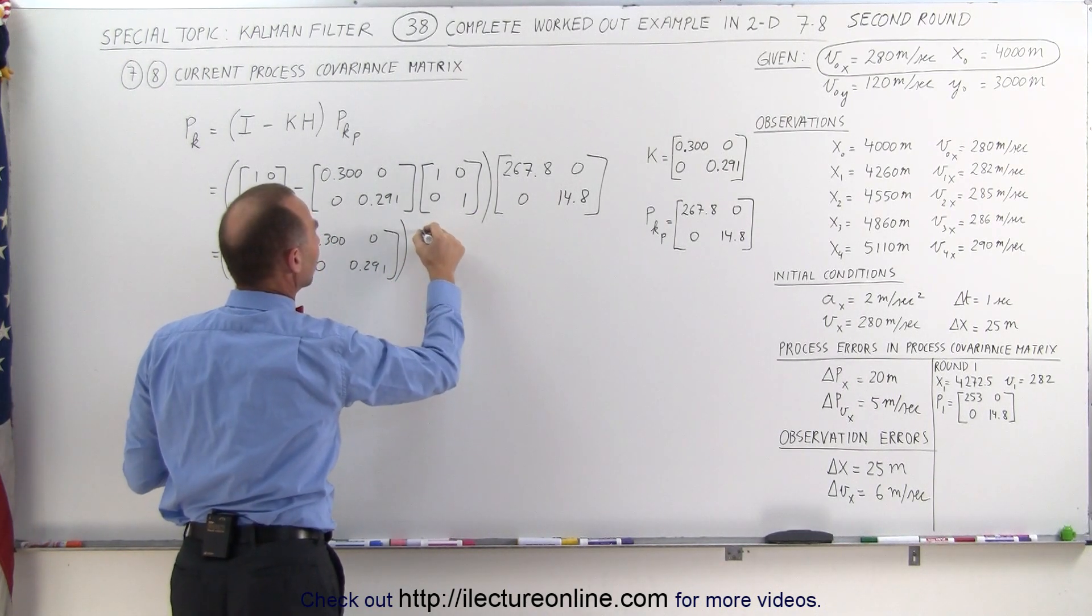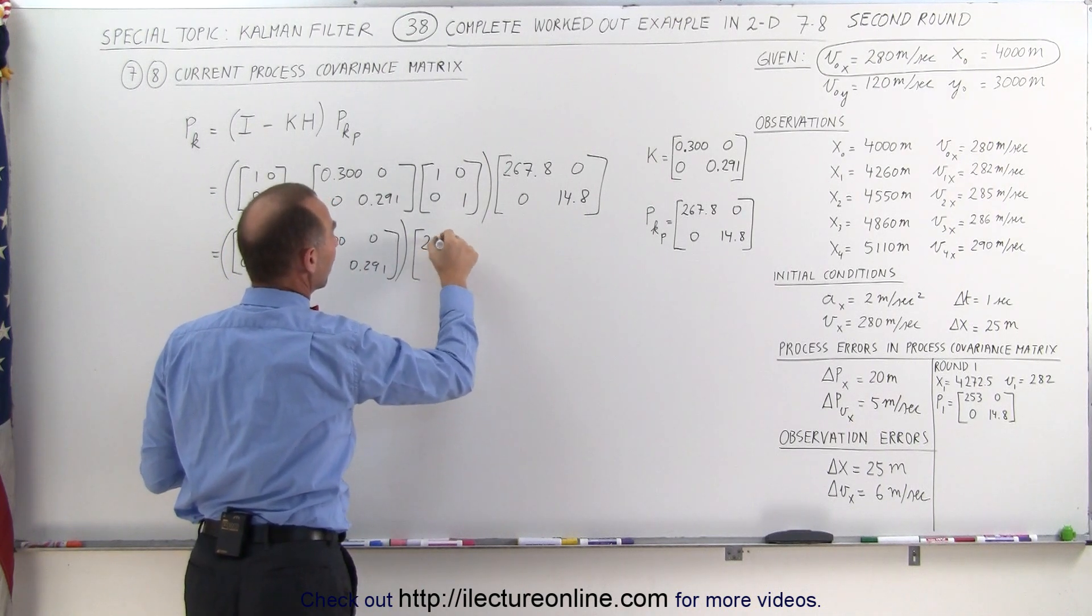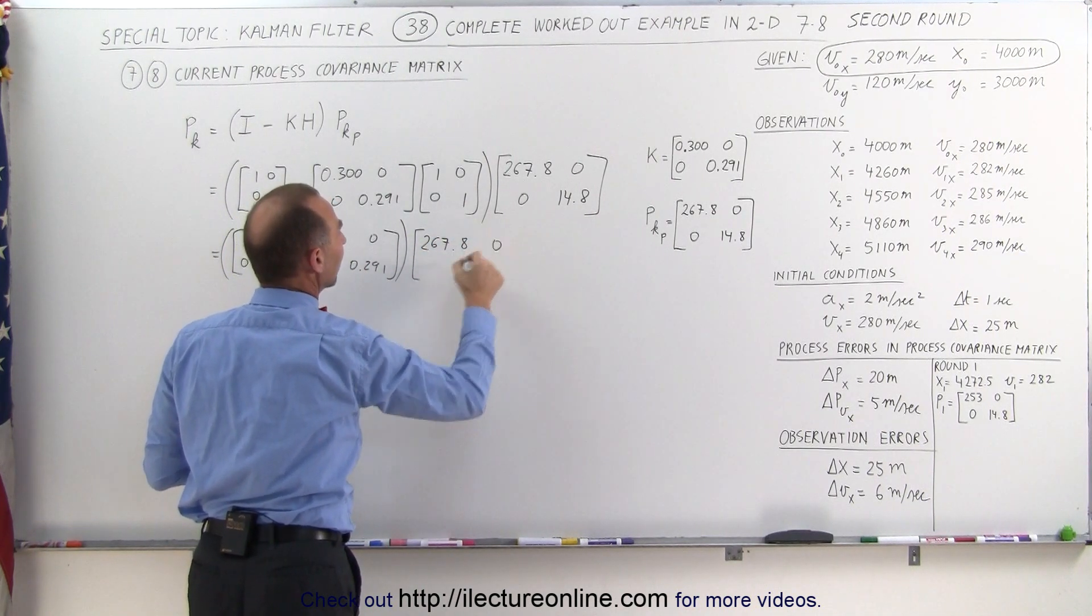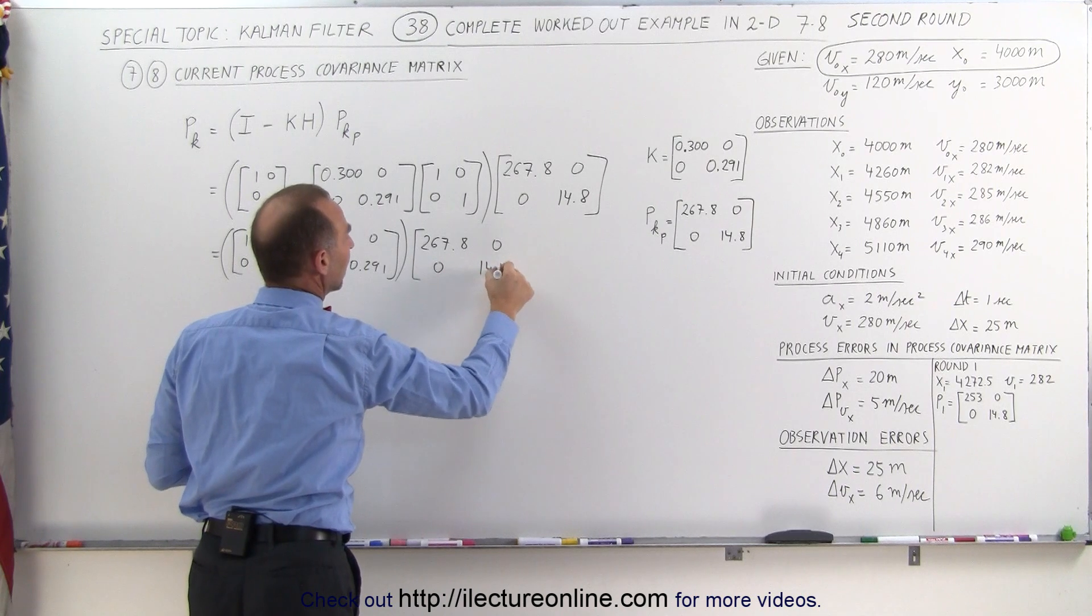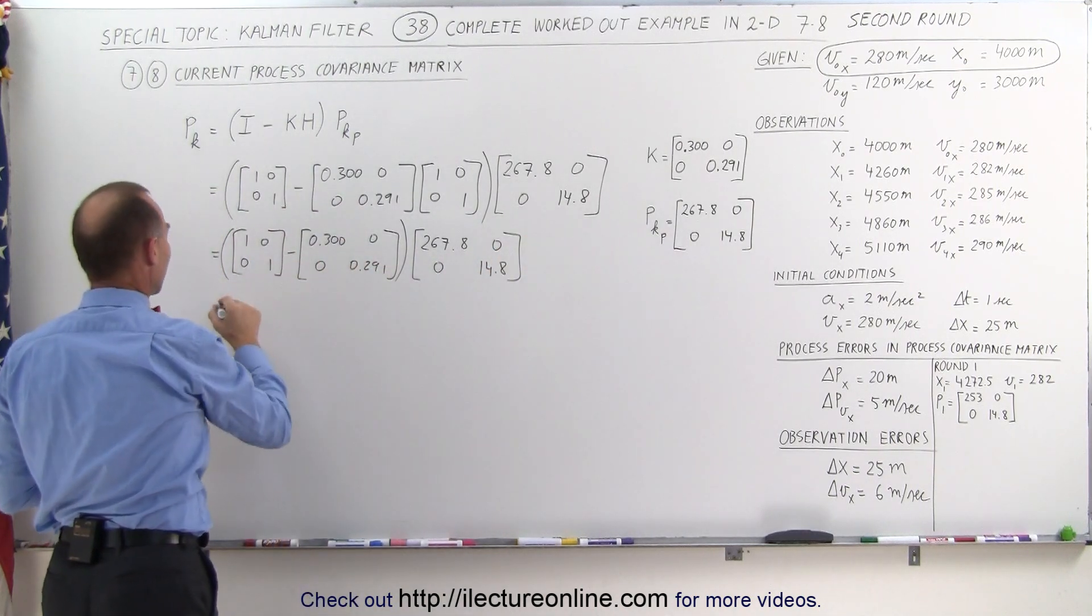And then we multiply times the previous process covariance matrix, or the predicted would be a better way to say it, 267.8, 0, 0, 14.8.